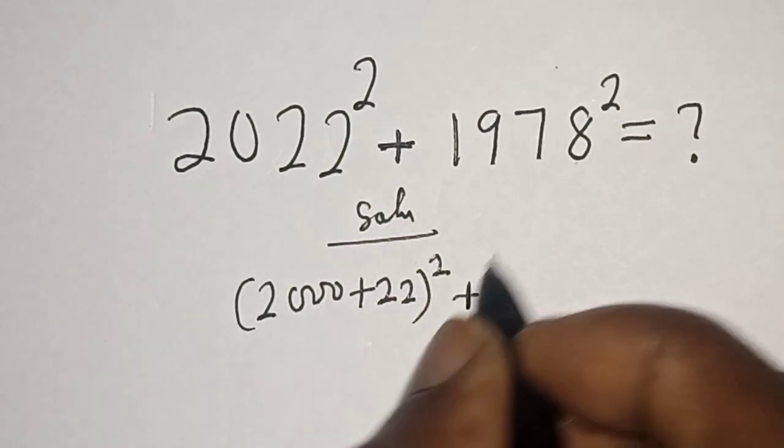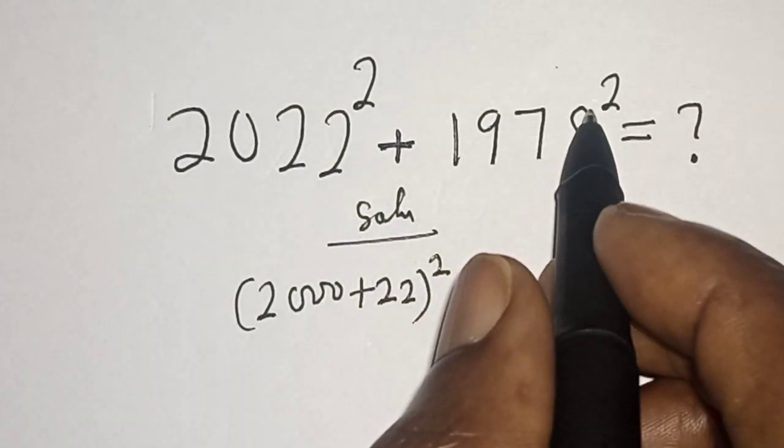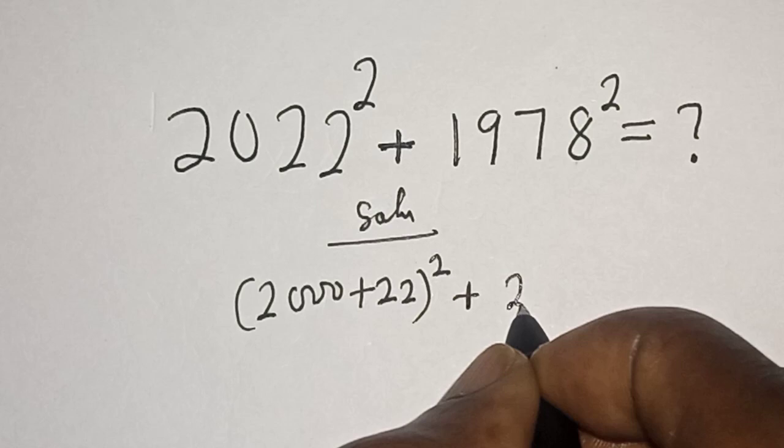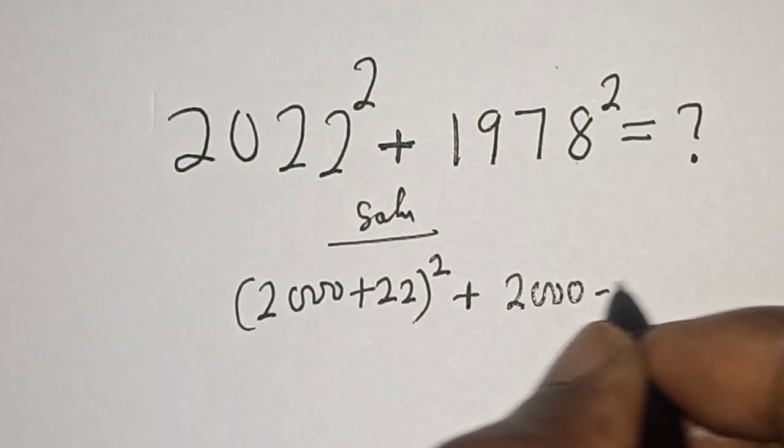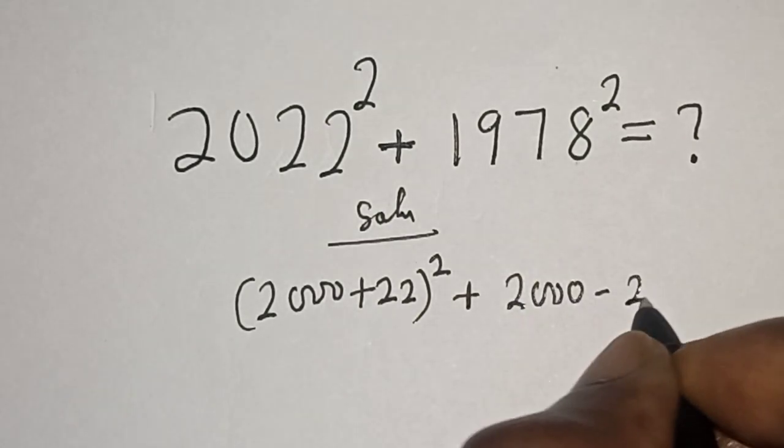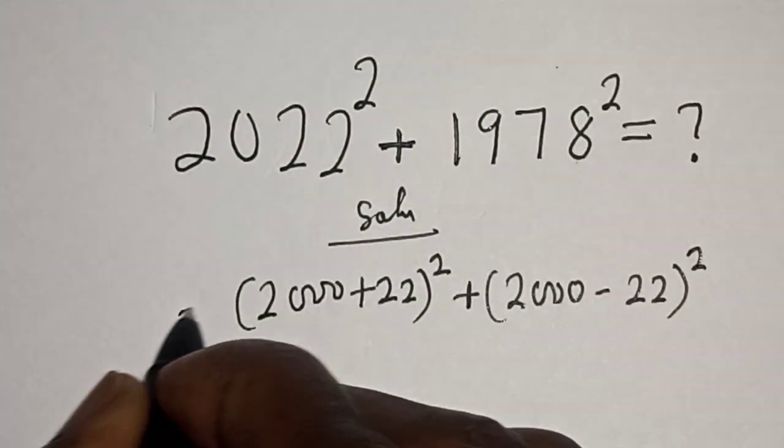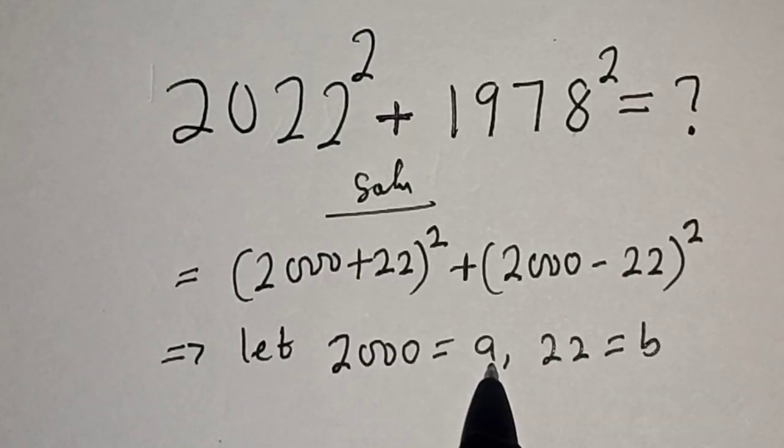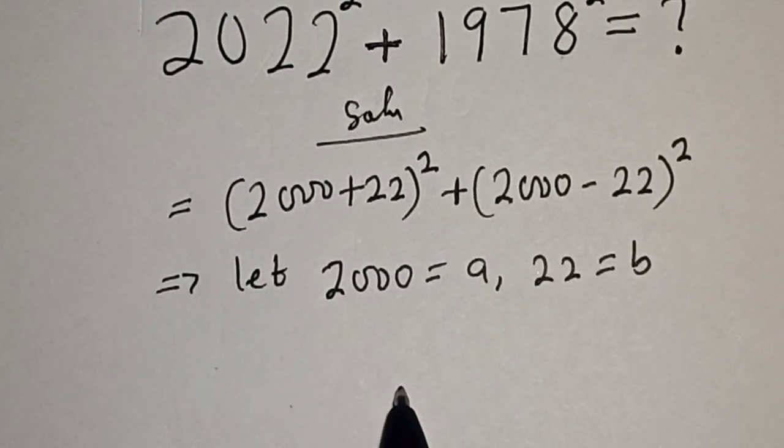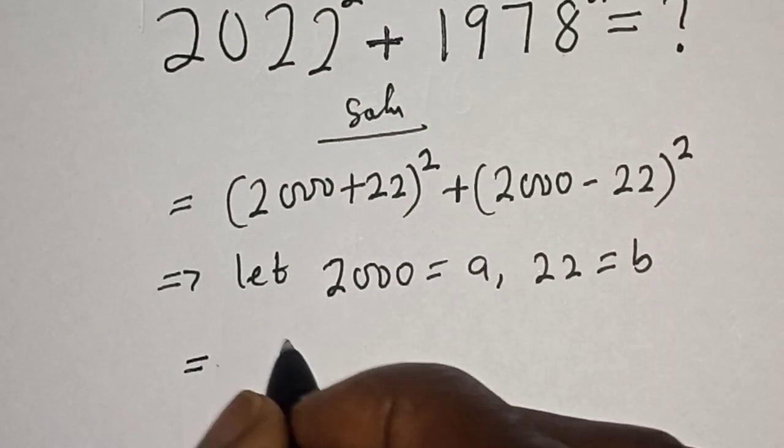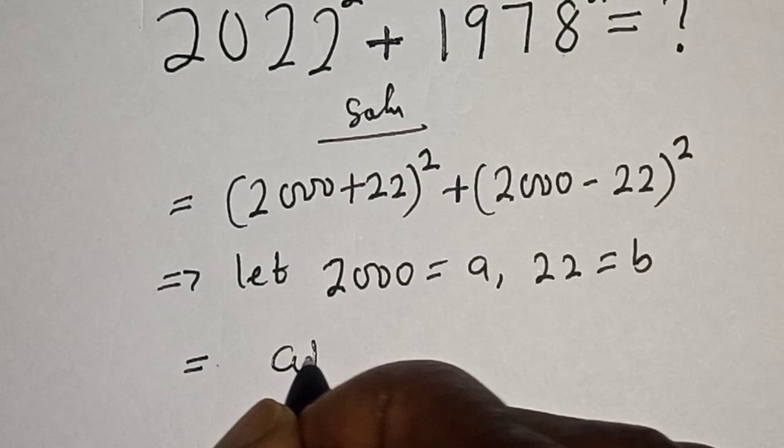Plus 1978² can be written as (2000 - 22)². Let 2000 = a and 22 = b. Then this is equal to (a + b)².